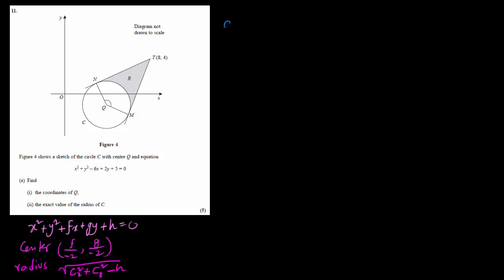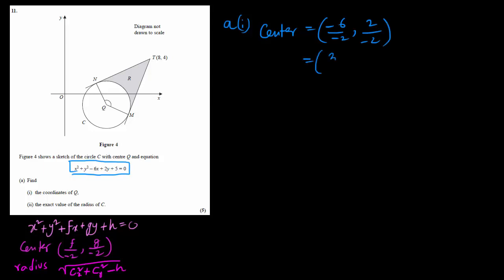In question number a1, we have this equation and we have to find the coordinates of Q, which is the center. The center equals: the coefficient of x is minus 6 divided by minus 2, and applying the same rule for y, that turns out to be (3, −1).